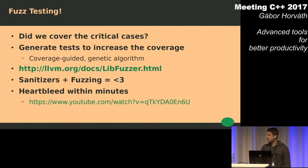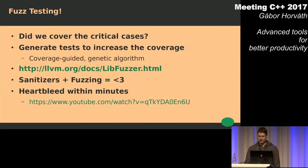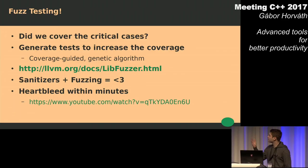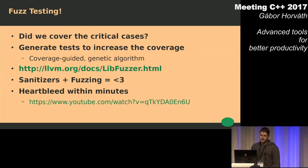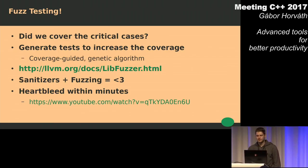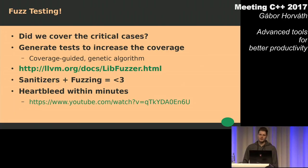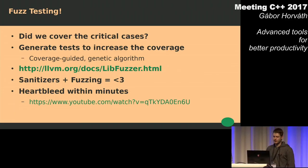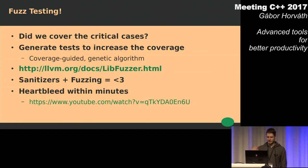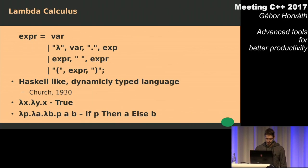Sometimes we need extra testing to be able to get rid of bugs and increase coverage. One way to increase coverage is to generate tests, and there is a fuzzing technique which is coverage-guided and uses a genetic algorithm. There is a great talk about this where they demonstrate that it is able to find the Heartbleed vulnerability within minutes. You want to be able to find as many bugs as possible, so you would like to fuzz something that has sanitizers turned on.